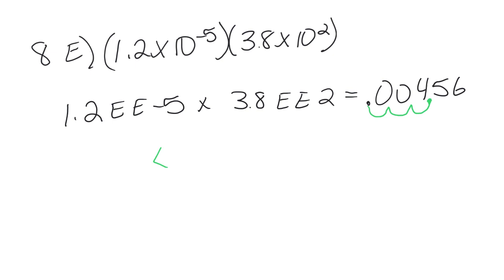I moved the decimal three places to the right, so it's times 10 to the negative 3. I know it's negative because the original number is less than 1. If that had been 456, we'd move the decimal to the left and the exponent would be positive. So the answer is reported as 4.56 times 10 to the negative 3. That's the end of the scientific notation review.